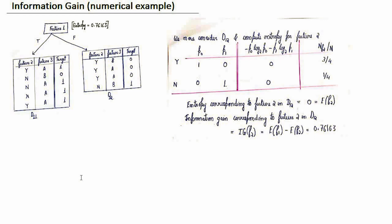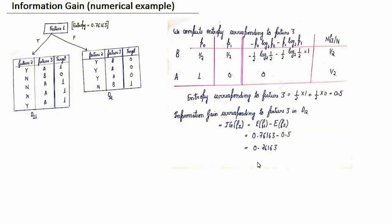We repeat the same process for D12. We consider Feature 2 for calculating the information gain. Feature 2 has two values, yes and no, and the entropy corresponding to Feature 2 in D12 comes out to be 0, with an information gain of 0.76163, meaning Feature 2 gives a pure node. We also calculate the entropy corresponding to Feature 3, which comes out to be 0.5 — still not a leaf node. The information gain for Feature 3 is 0.26, which is much less than the 0.76 obtained from Feature 2. So Feature 2 is selected for splitting D12.